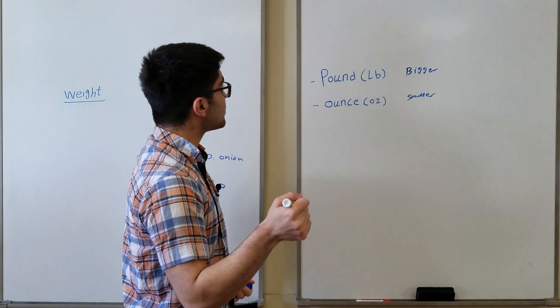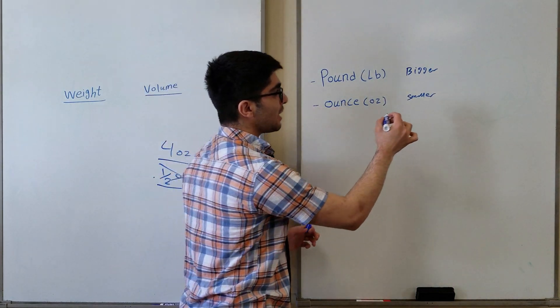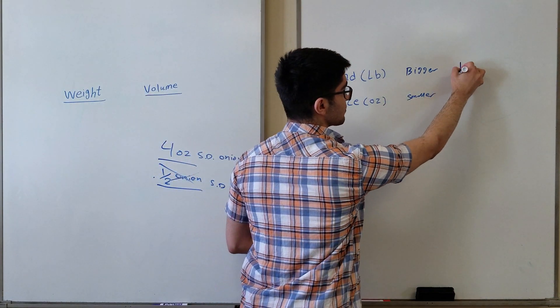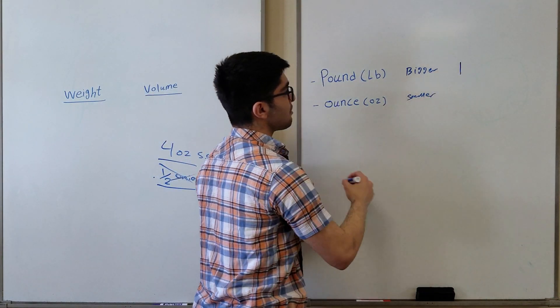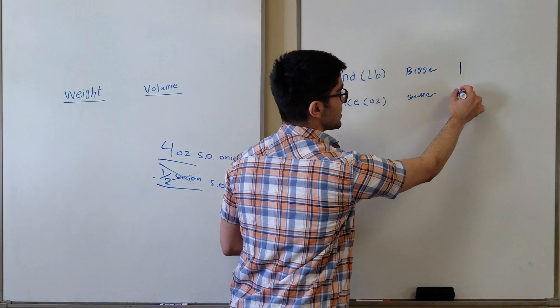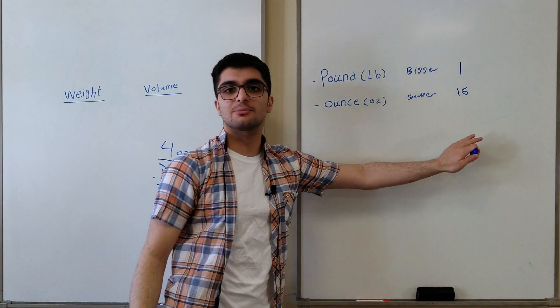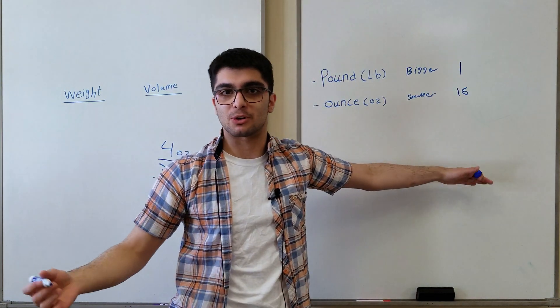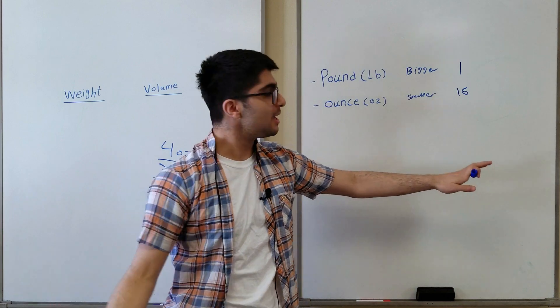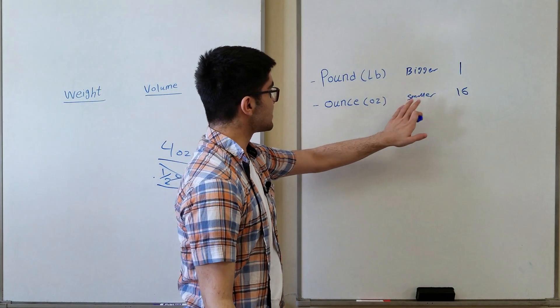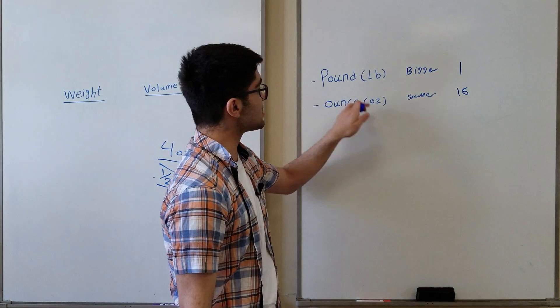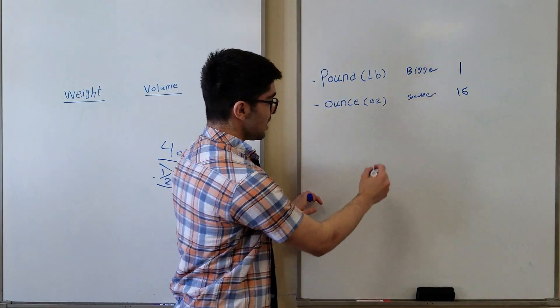In one pound there are 16 ounces, and this is something you should remember and memorize — there are 16 ounces in one pound.